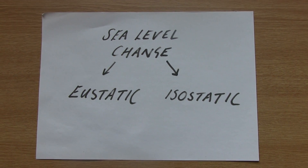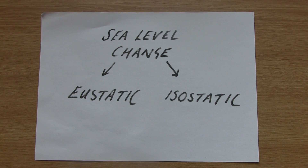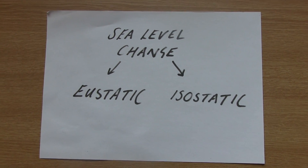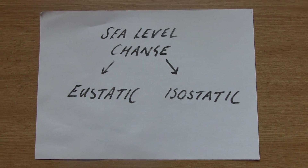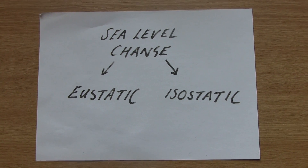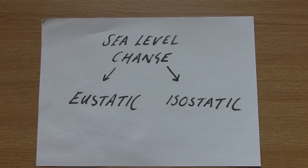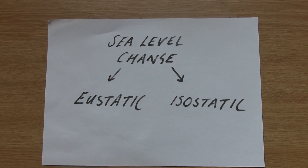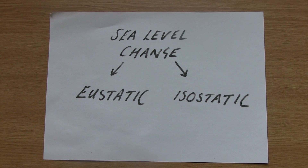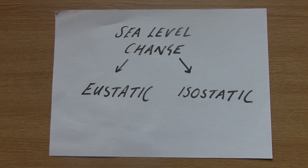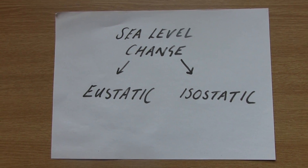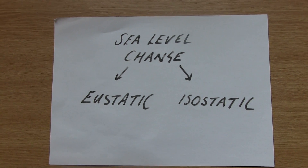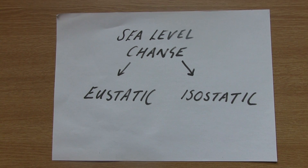Hello and welcome to this Flip Classroom video looking at sea level change. When it comes to your AS exam, you need to know about two different types of sea level change: eustatic change and isostatic change. You also need to know the geographical features that we find as a consequence of each of these different types of process. This video is designed for you to watch, pause, rewind, and make notes on in order to target exam questions when we come into our lessons next week.